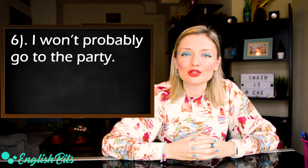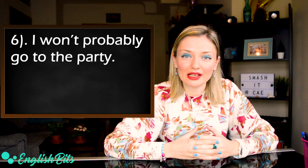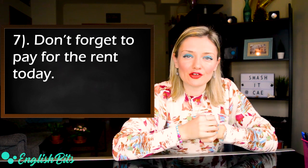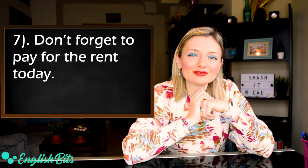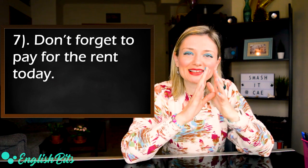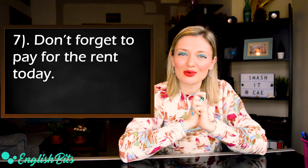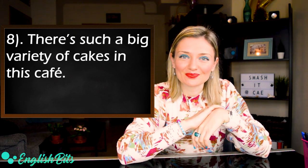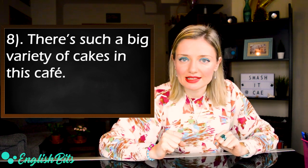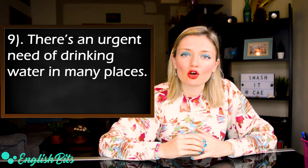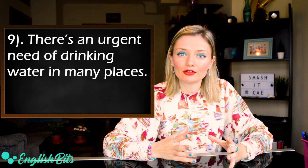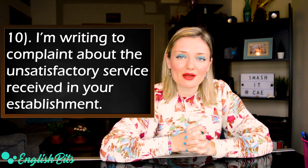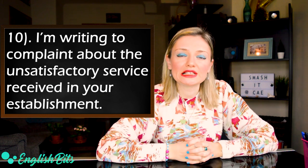Number six: 'I won't probably go to the party.' Look carefully and find the mistake. Number seven: 'Don't forget to pay for the rent today.' Find the mistake, be careful and write it down. Number eight: 'There is such a big variety of cakes in this cafe.' Find the mistake and correct it. Number nine: 'There is an urgent need of drinking water in many places.' Look carefully and find the mistake. And last but not least, number ten: 'I'm writing to complaint about the unsatisfactory service received in your establishment.'